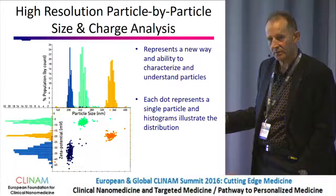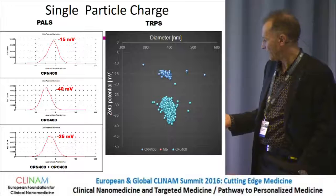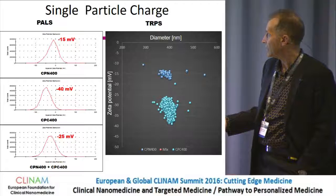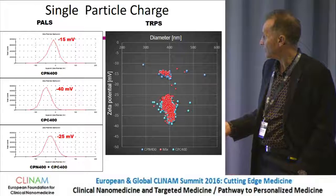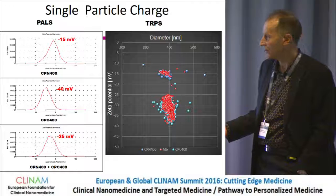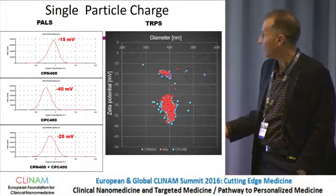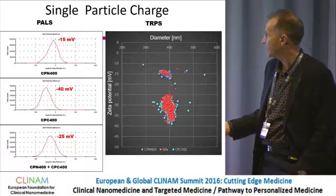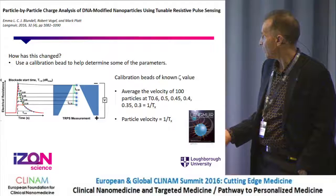This is a plot of zeta potential versus size — quite simple — and you can actually do that in three dimensions to get number as well. This shows what happens if you measure two particle sets mixed together. Measured individually, and then with PALS or DLS, you get a single number which varies depending on the nature, concentration, and size of the particles — not just the charge. So DLS becomes an unreliable method of measuring charge, whereas with TRPS you can separate the particles out one by one.